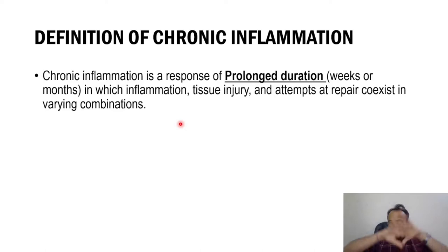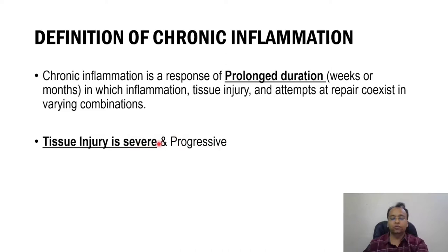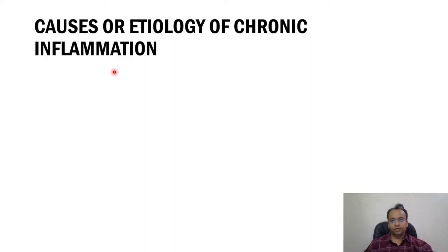There is presence of tissue injury and the body will try to repair that tissue injury as well. Chronic inflammation is of prolonged duration and the characteristic feature is that tissue injury is very severe and progressive — not mild as in acute inflammation. Now, which are the causes or etiology of chronic inflammation?